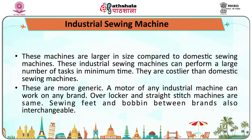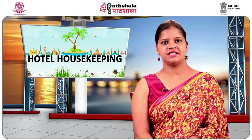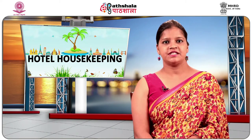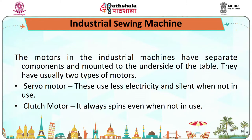These machines are larger in size compared to domestic machines and can perform a large number of tasks in minimum time. They are costlier than domestic sewing machines and more generic — a motor of any industrial machine can work on any brand. Overlocker or straight stitch machines are interchangeable, and sewing feet and bobbins between brands are also interchangeable.